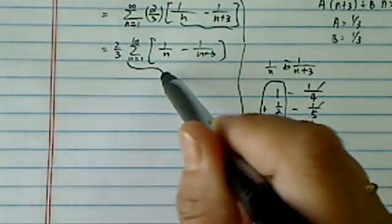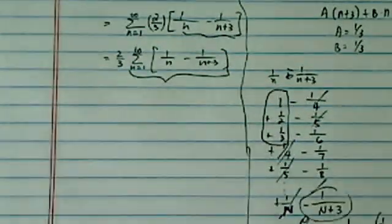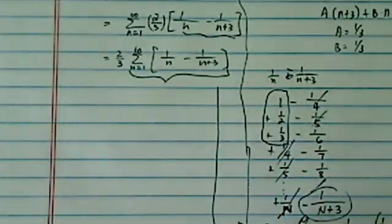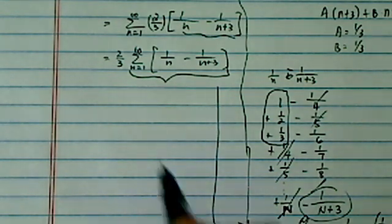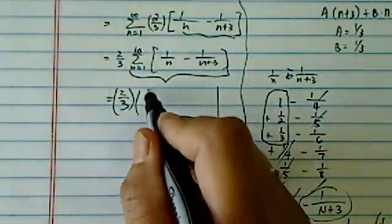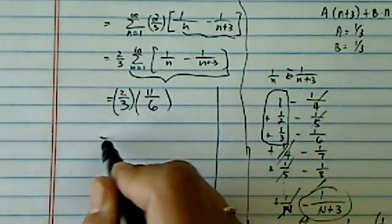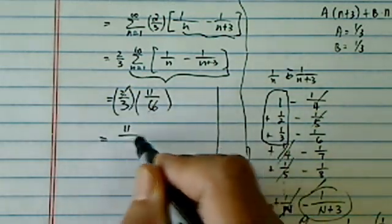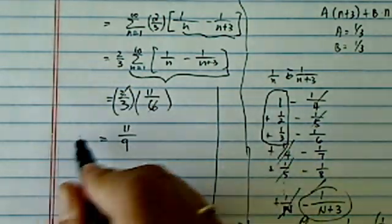So basically we calculated this one using the partial sum over there. So then I have 2/3 times 11 over 6. That's 11 over 9 is our sum.